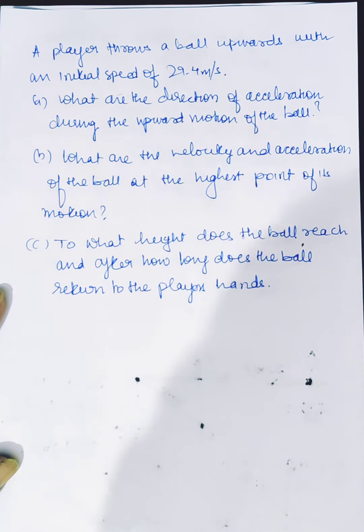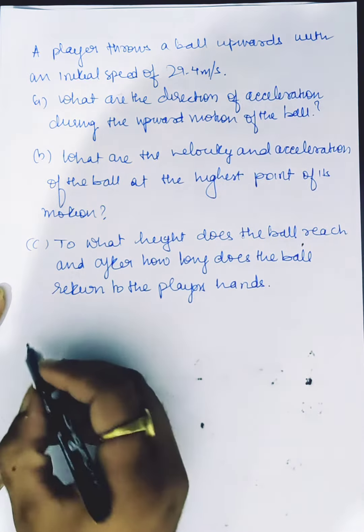A player throws a ball upwards with an initial speed of 29.4 meter per second. Part A: What is the direction of acceleration during the upward motion of the ball?